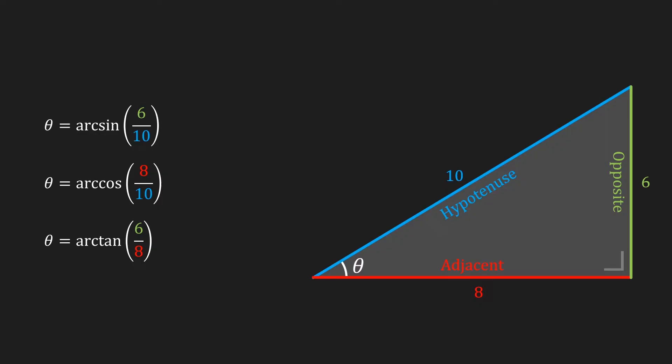There is a way to approximate these values by hand, but more on that later. Calculating the arcsine with a calculator would give a result of 36.87 degrees. Now it should come as no surprise that the arccosine and arctangent return the exact same angle, since all of these formulas calculate the same angle — theta in this case.